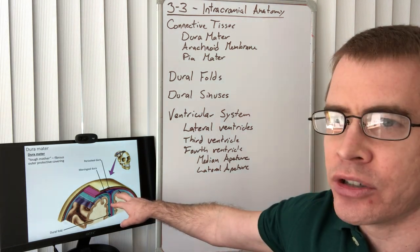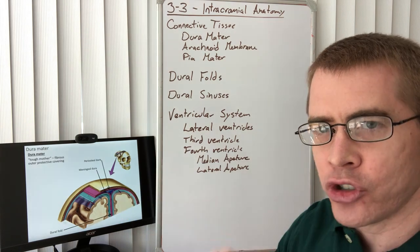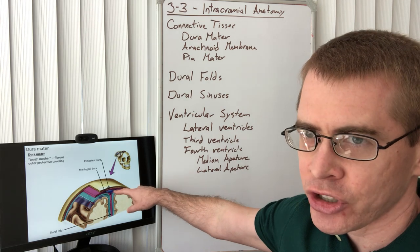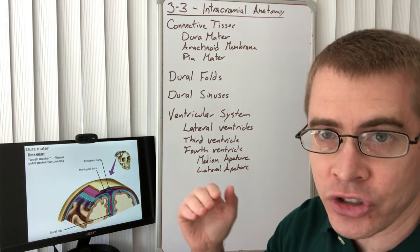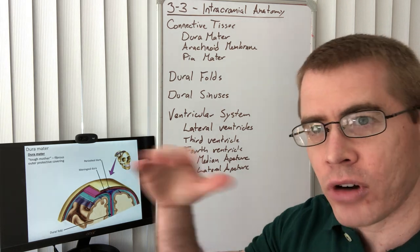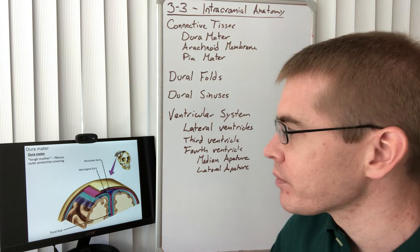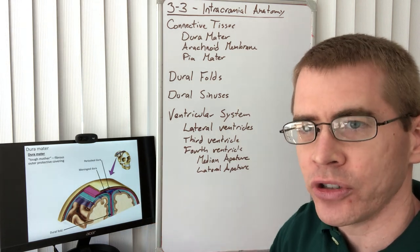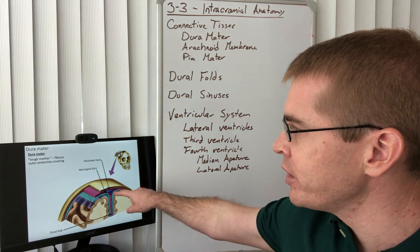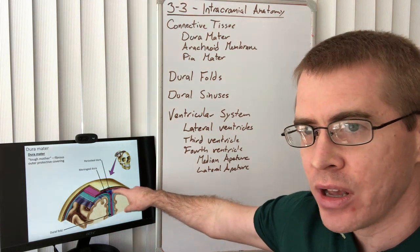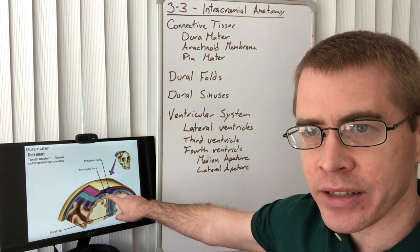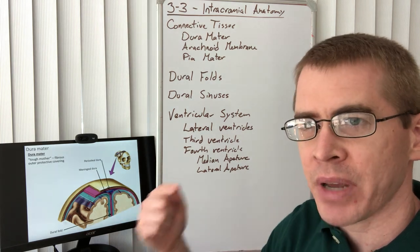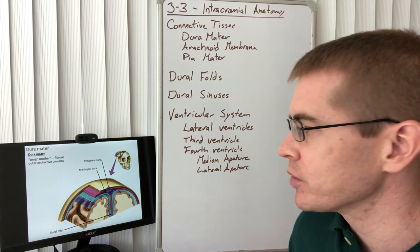The dura mater can divide into two different layers of connective tissue. There is a periosteal dura — periosteal meaning across the surface of the bone — and the meningeal dura, which is closer to the brain. Where these two layers separate, we have what's known as a dural sinus, through which venous blood flows between the periosteal and meningeal layers.